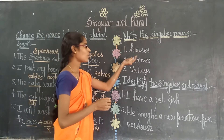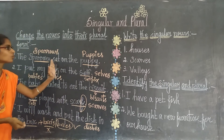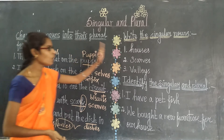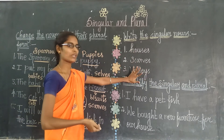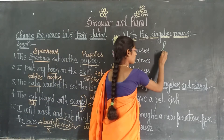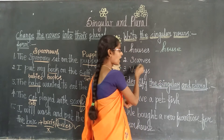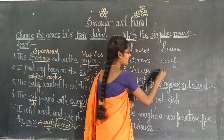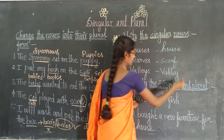Now we are going to write the singular nouns for these plural forms. Houses — singular is house. Scars — singular is scar. Valleys — singular is valley.